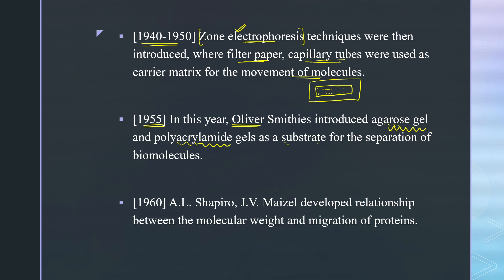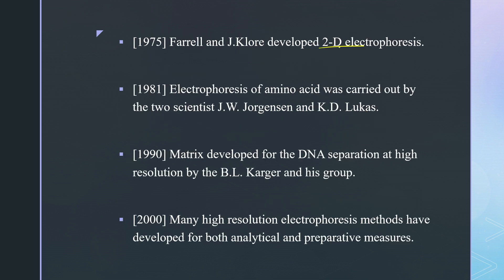In 1960, AL Shapiro and Micelle developed the relationship between molecular weight and migration of proteins. In 1975, Feral and JK Lor developed 2D electrophoresis. In 1981, electrophoresis of amino acids was carried out with the help of scientists JW Johnson and KW Lucas.